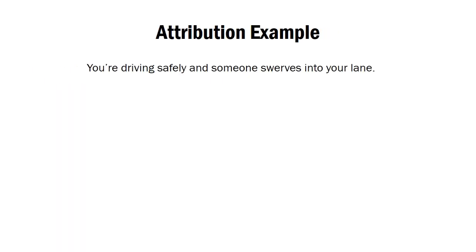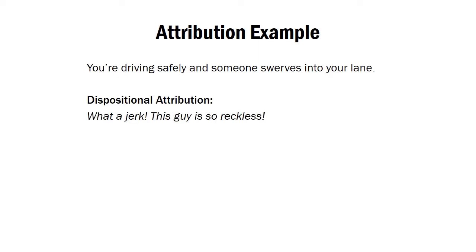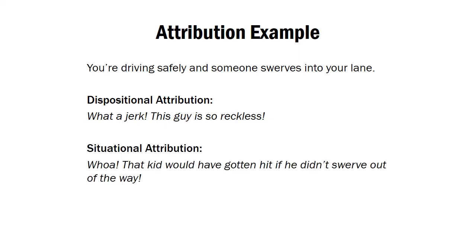Imagine you're driving safely down the road and someone swerves into your lane — another behavior you'd want to draw an attribution for. If you draw a dispositional attribution, you might think, 'what a jerk, that guy is so reckless' — something about the person himself caused him to swerve. But if you drew a situational attribution, you might say there's a kid who would have gotten hit if that person didn't swerve — now it's a case of the person responding to situational pressures.